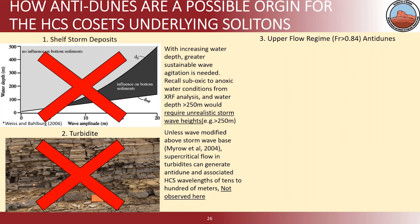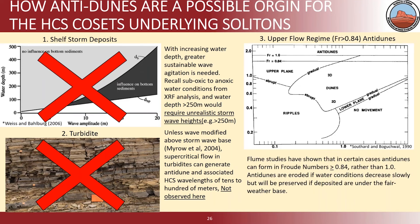We don't think there are shelf storm pauses because the water depth is too deep — more than 250 meters in the water depth for the Maxwell equivalent. We don't believe turbidites because the wavelength of hummocky cross-stratification from turbidites is much smaller than what we see in the outcrop. So we're going to go back to the upper flow regime: between standing solitons and hummocky cross-stratification beds which are preserved. We find that a Froude number above about 0.85 means we have the soliton.